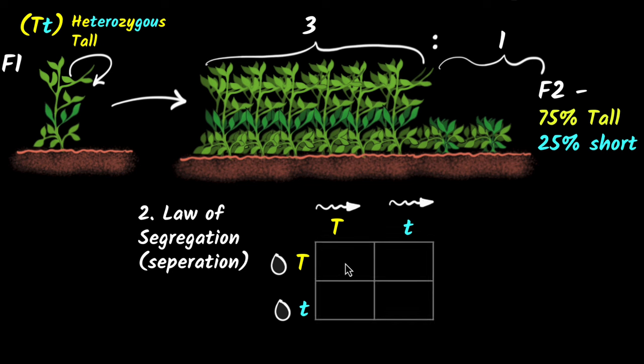So we can actually draw a table to write that down. So if this sperm unites with this egg, we'll get capital T, capital T. If this sperm unites with this egg, we'll get capital T, small t. If this one unites with this one, again, we'll get capital T, small t. And if these two unite, we'll get small t and small t.